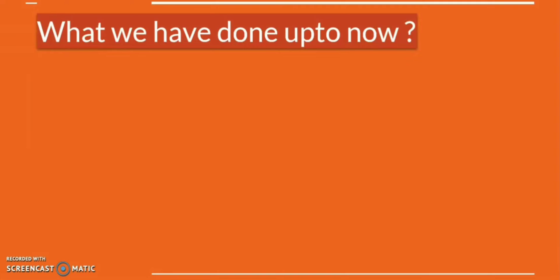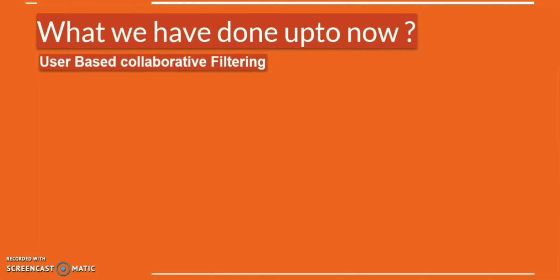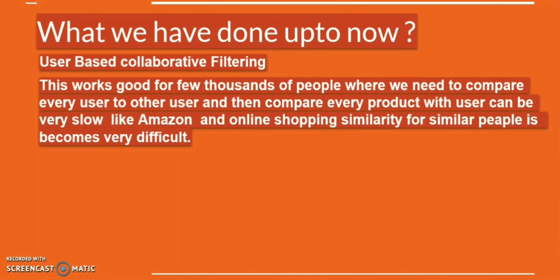Last time we went through user-based collaborative filtering, where we find the similarity between persons and items. There is an issue that we will try to overcome in this video. If you implement user-based collaborative filtering on a small database it's okay, it will work. But if you have a large database like Amazon, it is not going to be appreciated in that scenario.